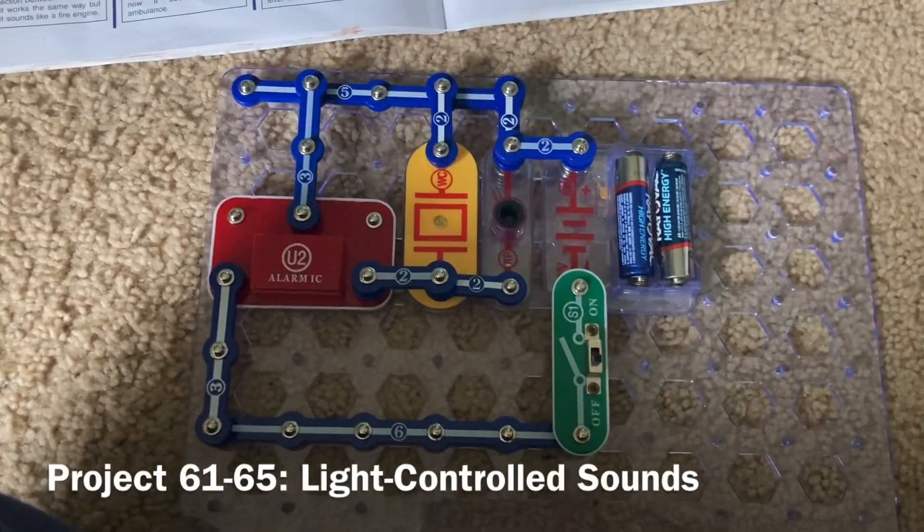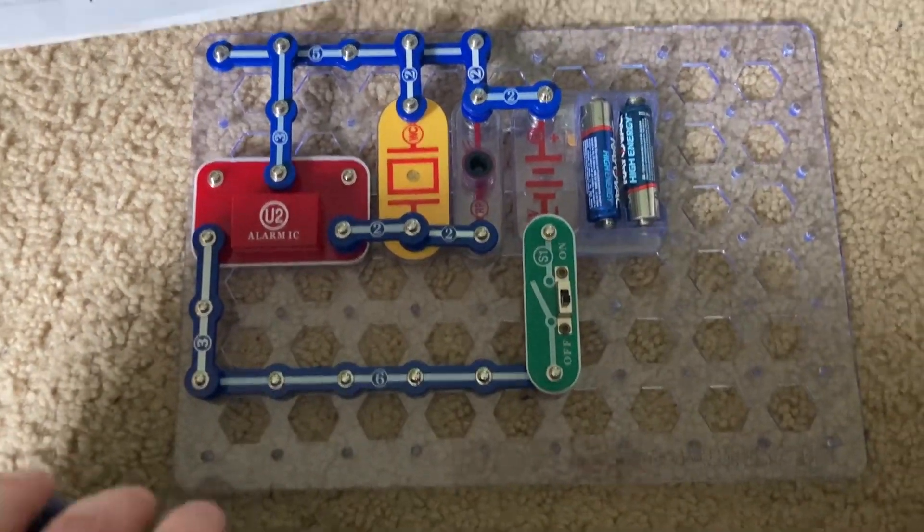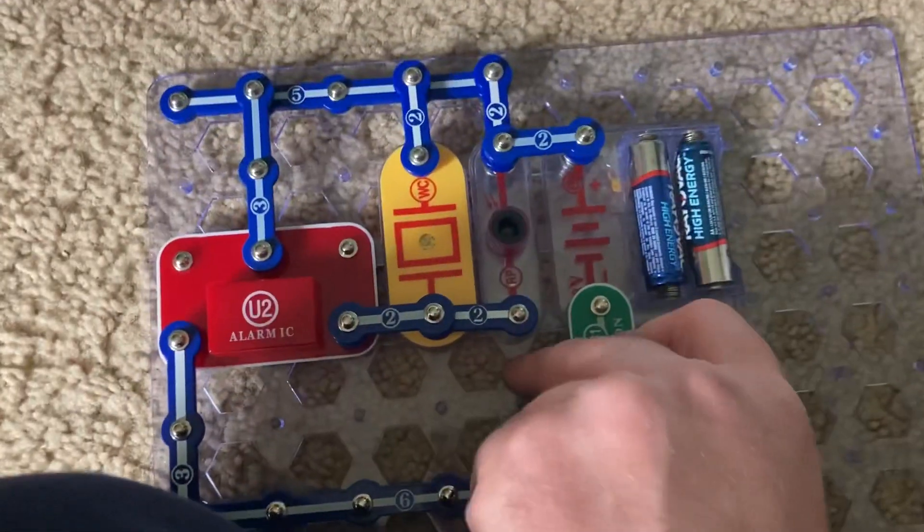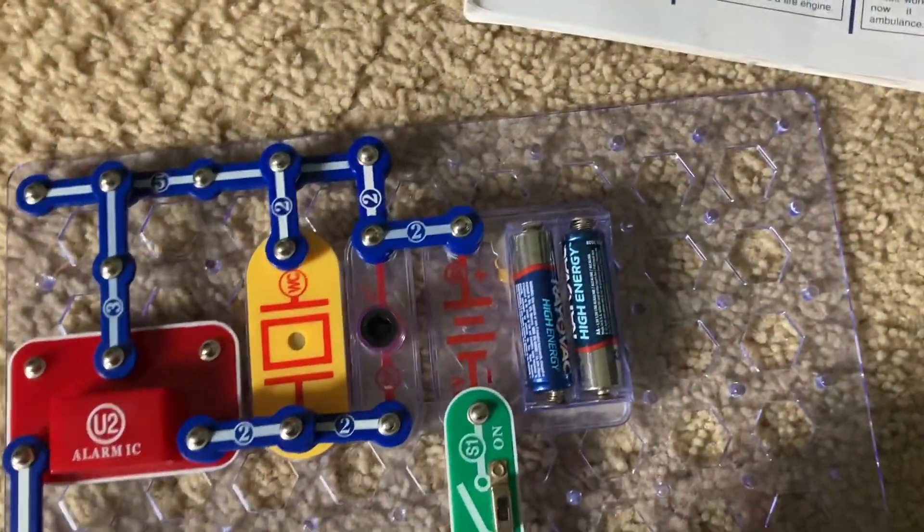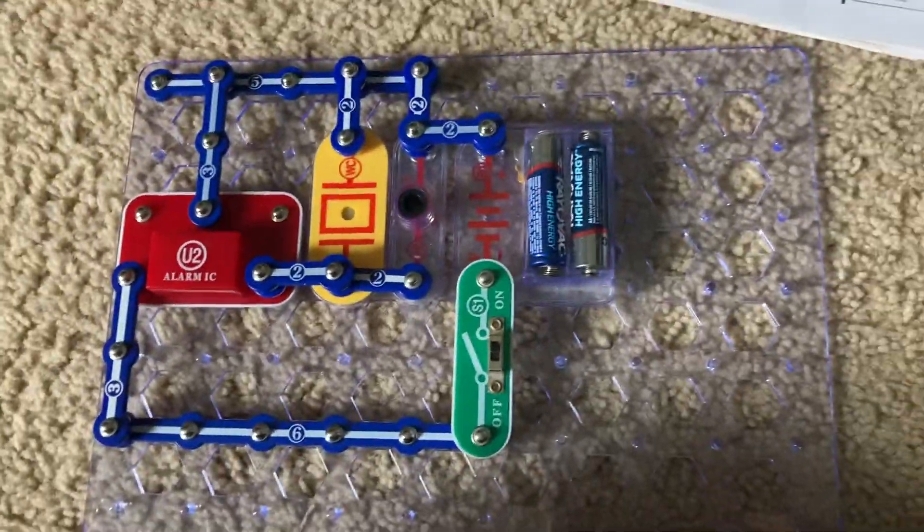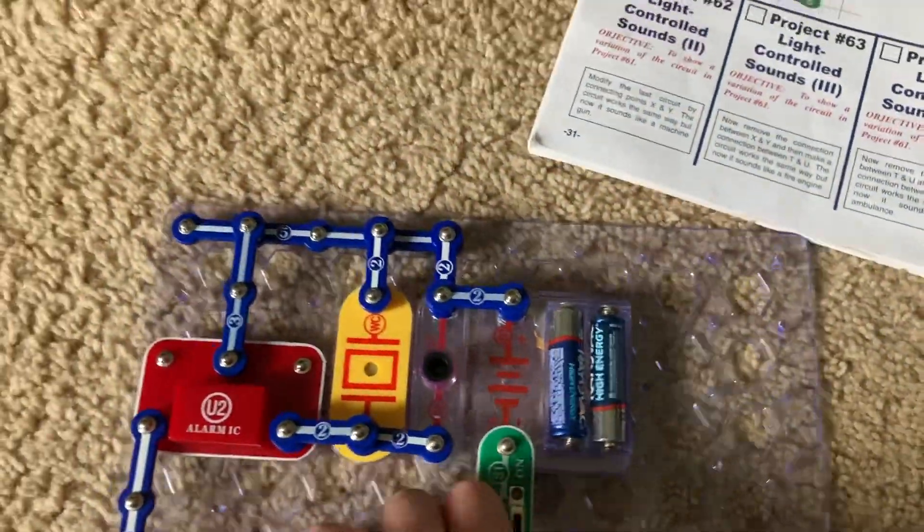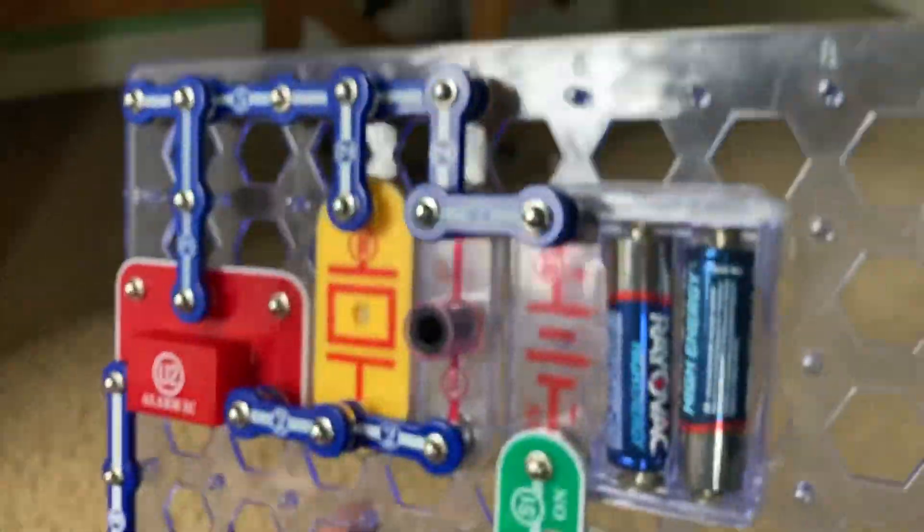Project 61 is light-controlled sounds. When I turn on the slide switch, you'll hear a faint police car siren. You can increase the volume of the sound by shining more light on it.